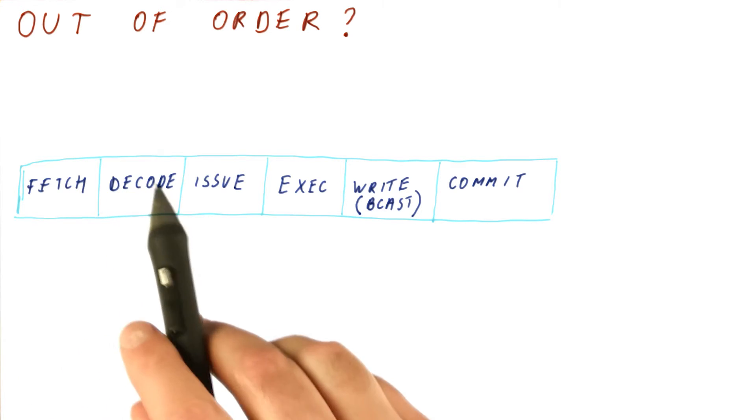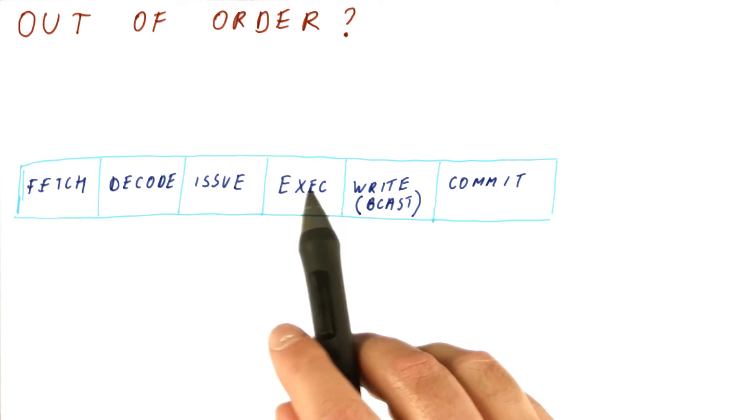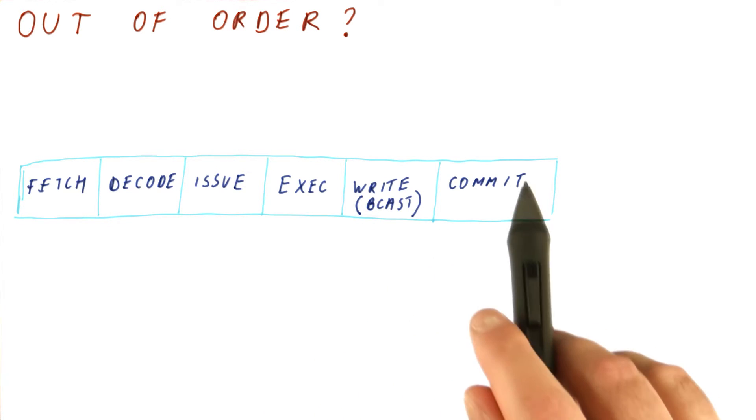This is the fetch stage, there is a decode stage, we issue, then we dispatch, and then we have execution, and then the write of the result, which is the broadcast we have, and then finally the commit.